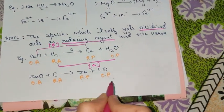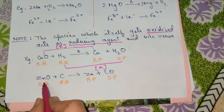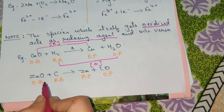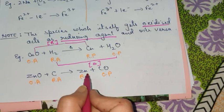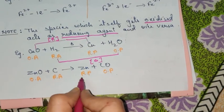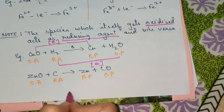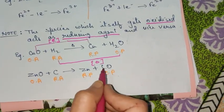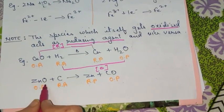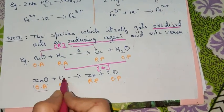Now see the next equation — ZnO is reacting with carbon to give Zn and CO. Let us identify where oxidation and reduction are occurring. ZnO is getting converted into Zn — oxygen is lost, so ZnO undergoes reduction; Zn is the reduced product. Carbon is getting converted into carbon monoxide — carbon gains oxygen, so oxidation occurs; CO is the oxidized product. The one undergoing reduction behaves as oxidizing agent, and the one undergoing oxidation behaves as reducing agent.